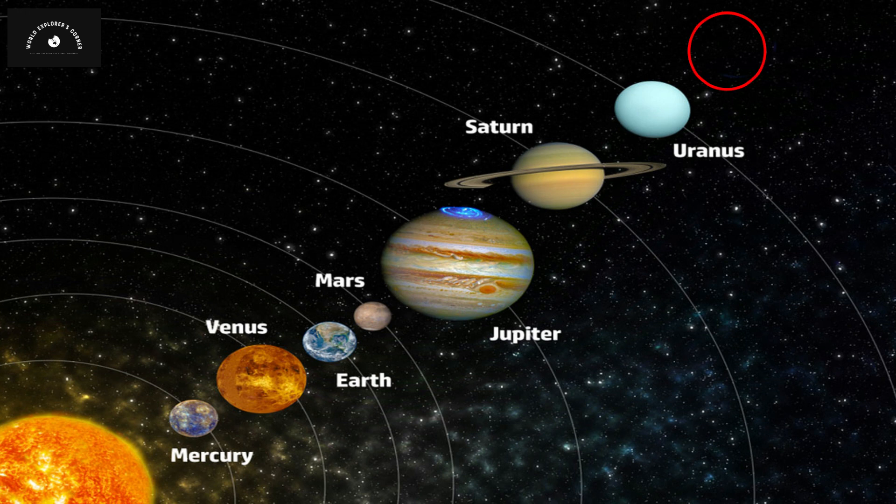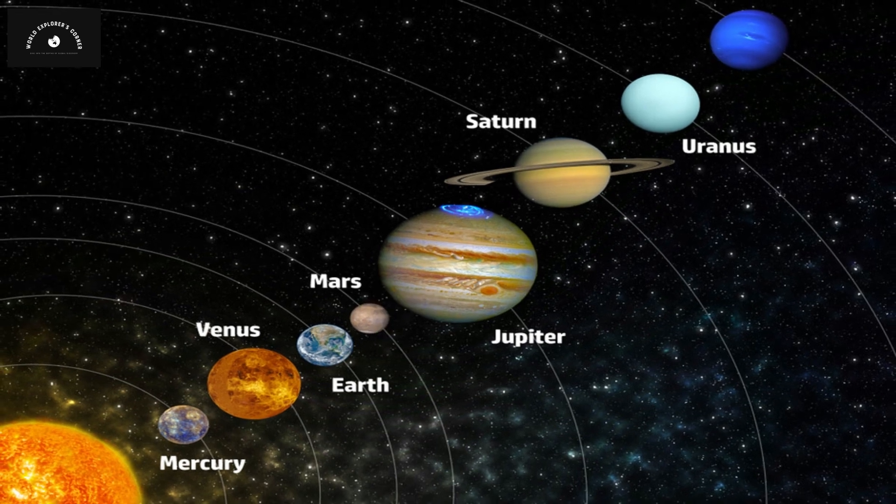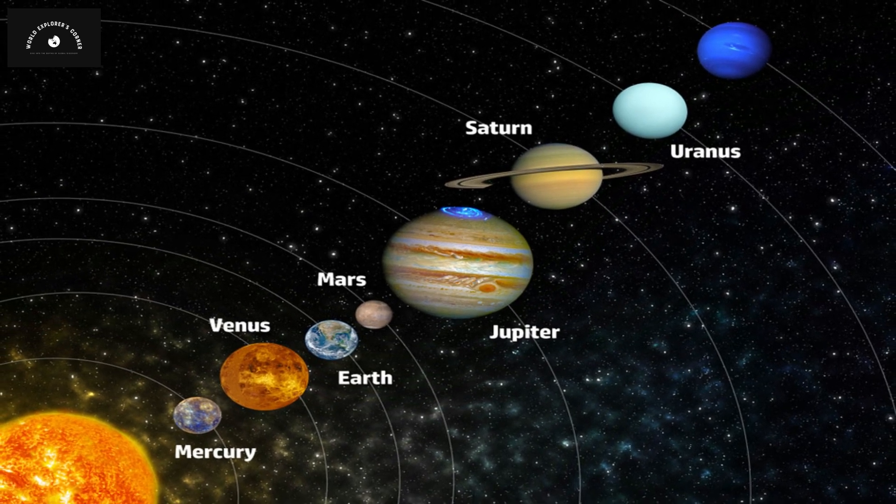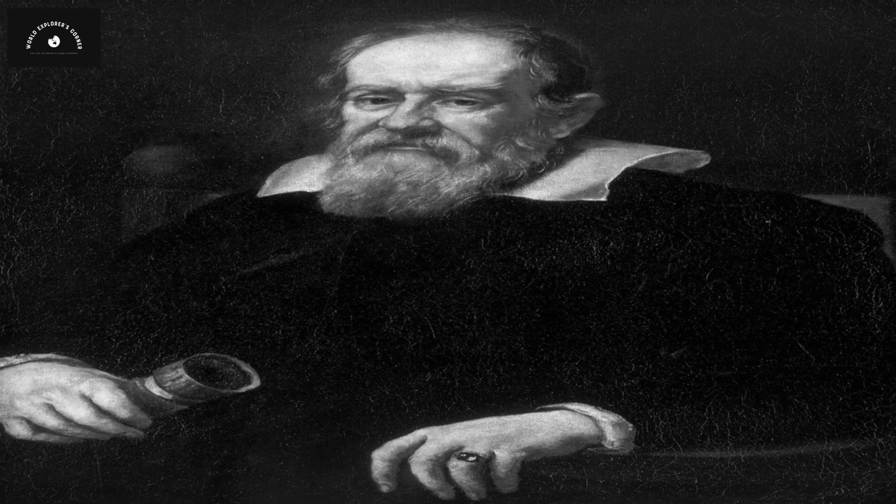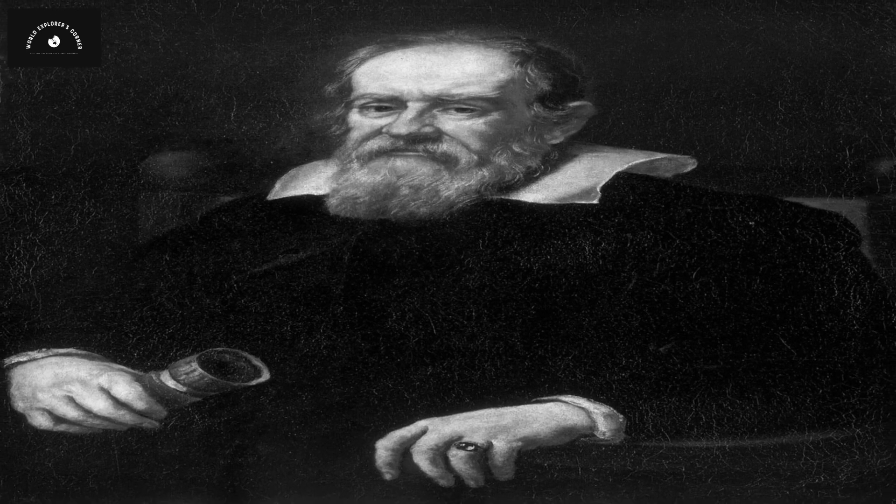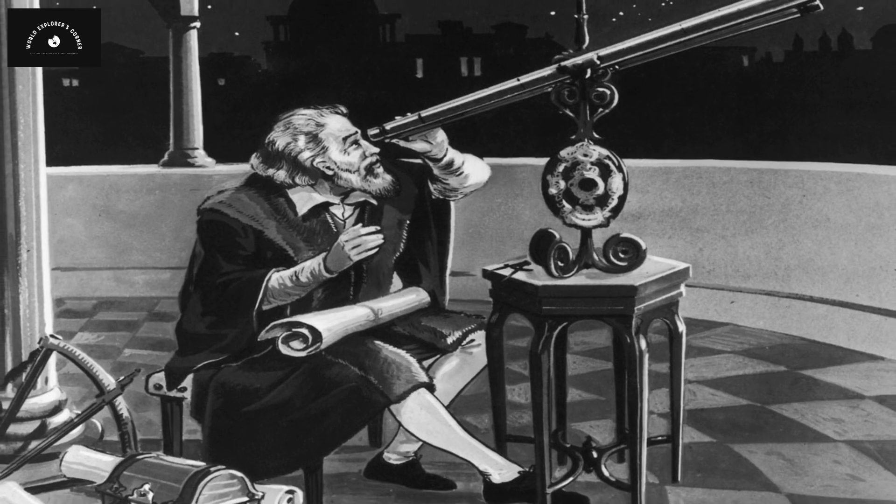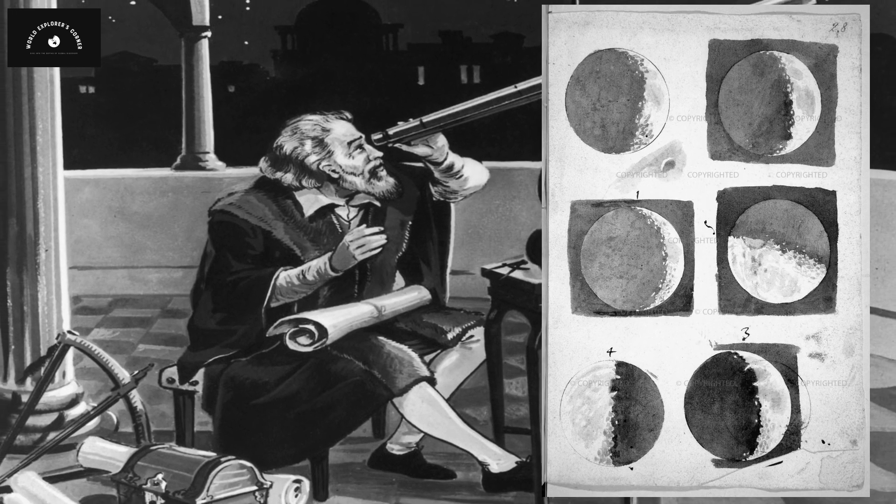This new planet's size aligned with that of Uranus. Le Verrier's prediction proved remarkably accurate, leading to the discovery of the eighth planet of our solar system, which we now know as Neptune. Interestingly, the famous astronomer and telescope inventor Galileo had previously observed Neptune, but he mistakenly categorized it as a star in his drawings, failing to recognize it as a planet.